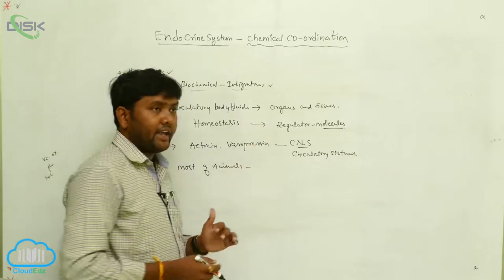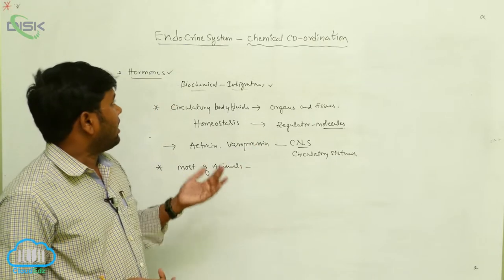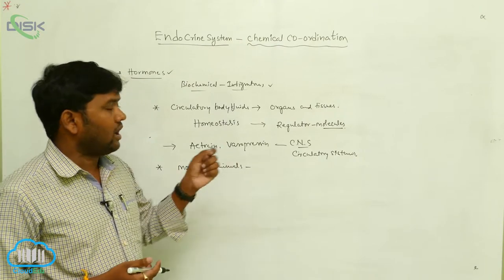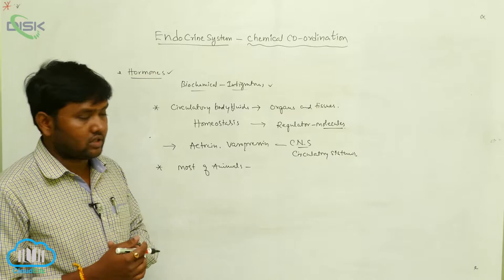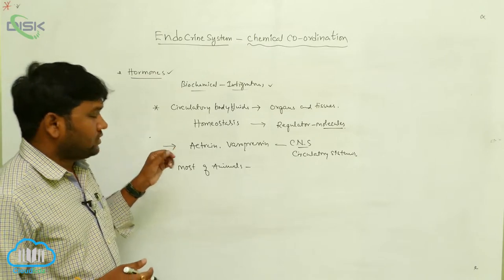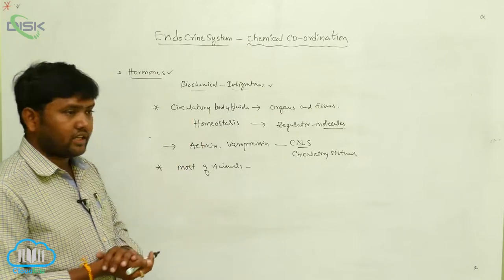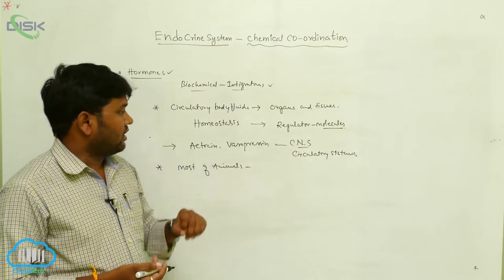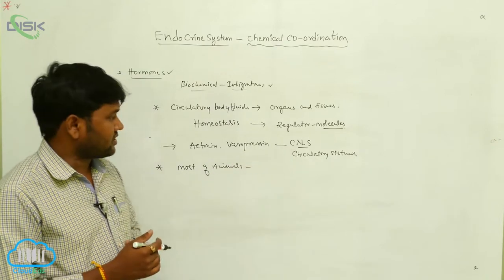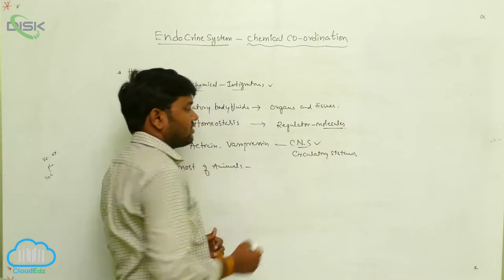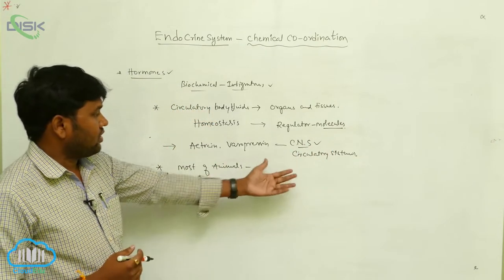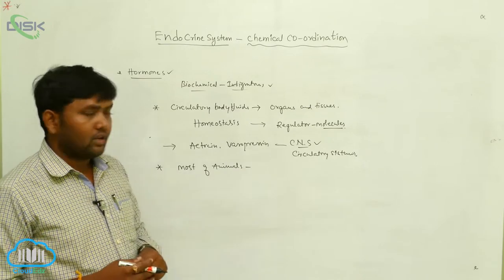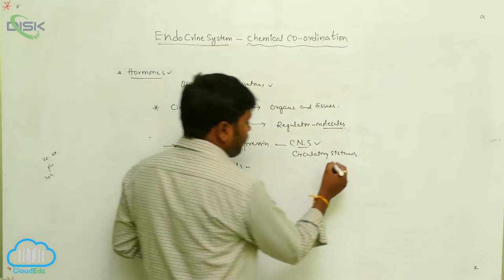In higher animals, hormones function as regulatory or control molecules. Some hormones like oxytocin and vasopressin are secreted from the central nervous system and transported into different organs through the circulatory system or circulatory fluids.